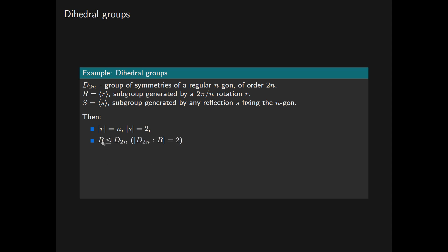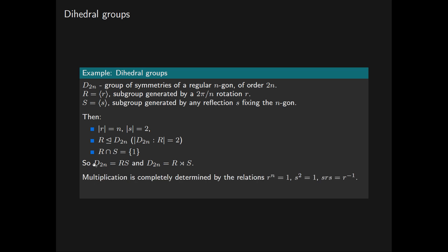The subgroup generated by the rotation r is normal in D2N because its index in D2N equals 2. The intersection of the subgroups R and S is trivial, so we have that D2N equals RS, and therefore D2N is the internal semi-direct product of R by the subgroup S. Group multiplication in D2N is completely determined by the relations r^N = 1, s^2 = 1, and srs = r-inverse.